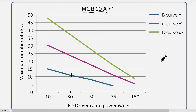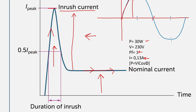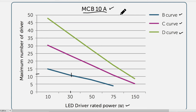Going back to my calculation, a 30-watt floodlight uses approximately 130 milliamps. Even accounting for a power factor of 0.8 the current is still low. Dividing 10 amps by 0.13 amps would suggest I could connect 77 floodlights to a 10-amp circuit breaker. But according to the graph, I can only connect a maximum of 11, and even 60 floodlights would most probably trip a 10-amp circuit breaker.